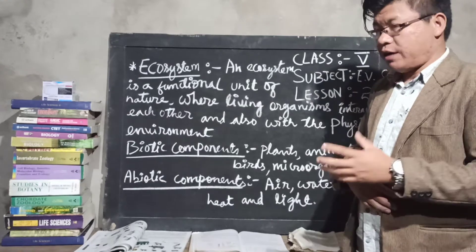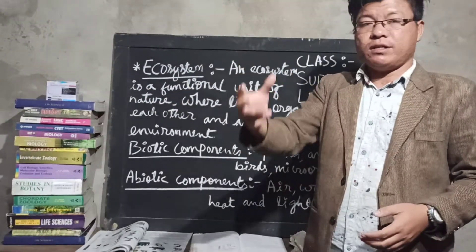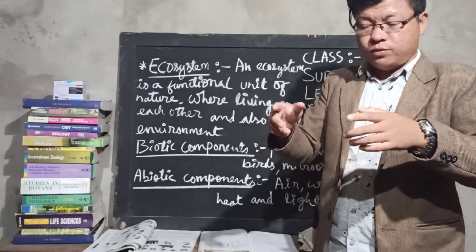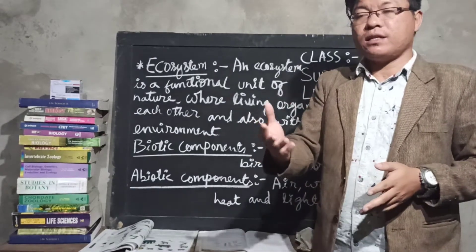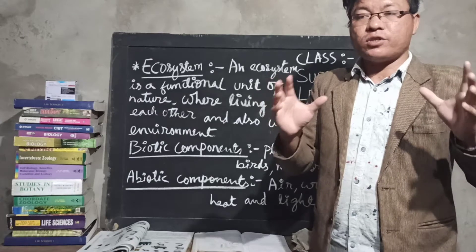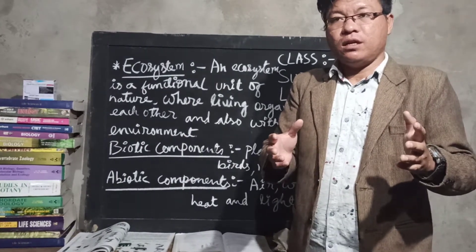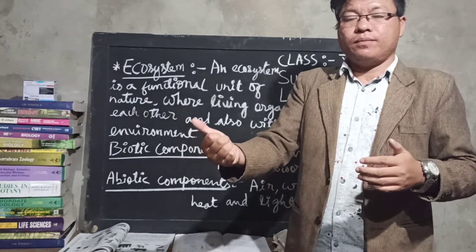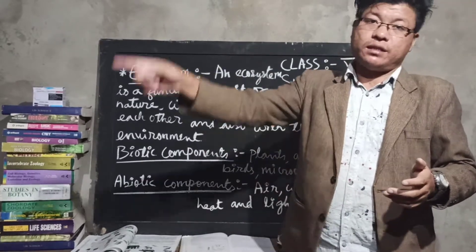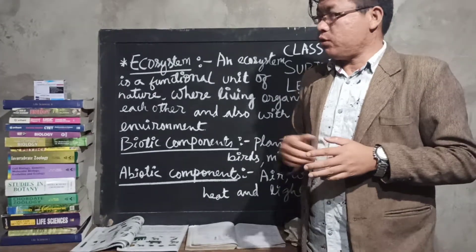After that we have decomposers. All these sequential levels of consumers and the producers go through in one unidirectional way to recycle again — through the gaseous cycle in decomposition. Decomposers are there to decompose organic matter or substances into inorganic form, so that the inorganic materials can be used by the producers again to recycle the gaseous cycle.